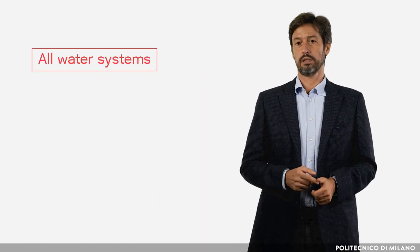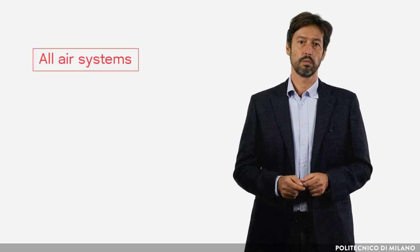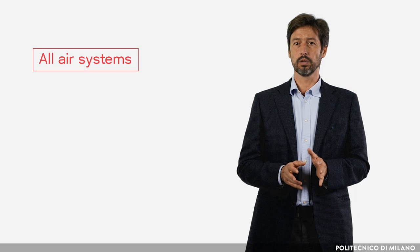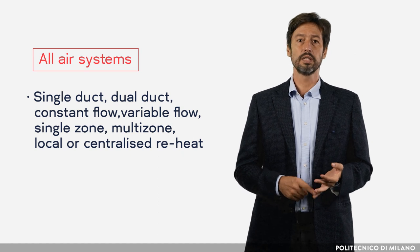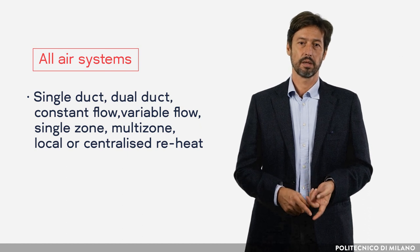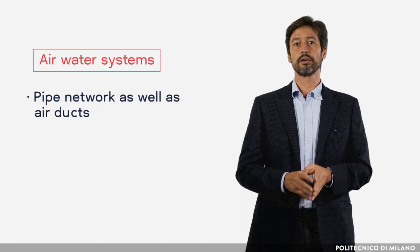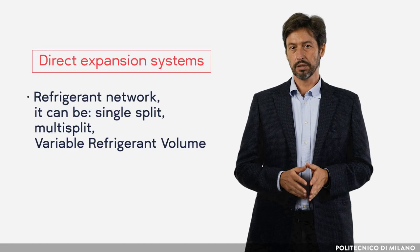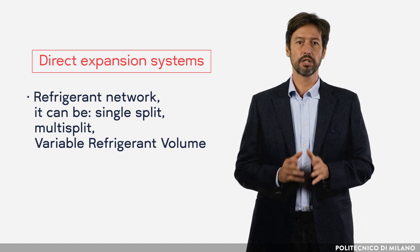All-water systems can be two or four pipes. All-air systems can be of several typologies according to combinations of: single duct or dual duct, constant flow or variable flow, single zone or multi-zone, and local or centralized reheat. Air-water systems have both a pipe network and air ducts. Direct expansion systems have a refrigerant network and can be single split, multi-split, or variable refrigerant volume.